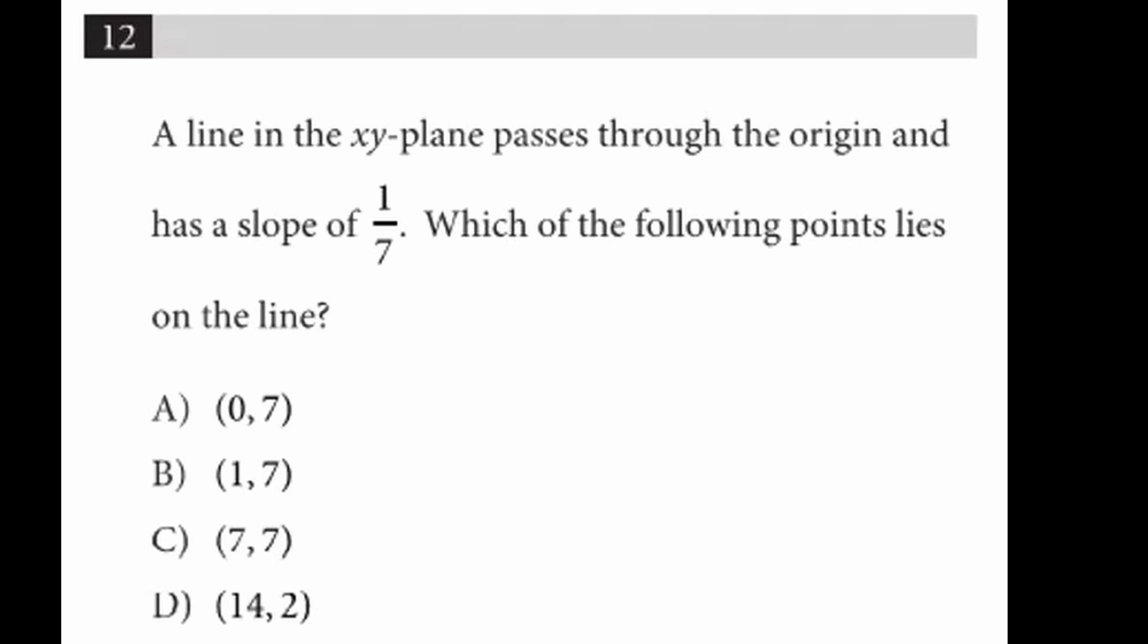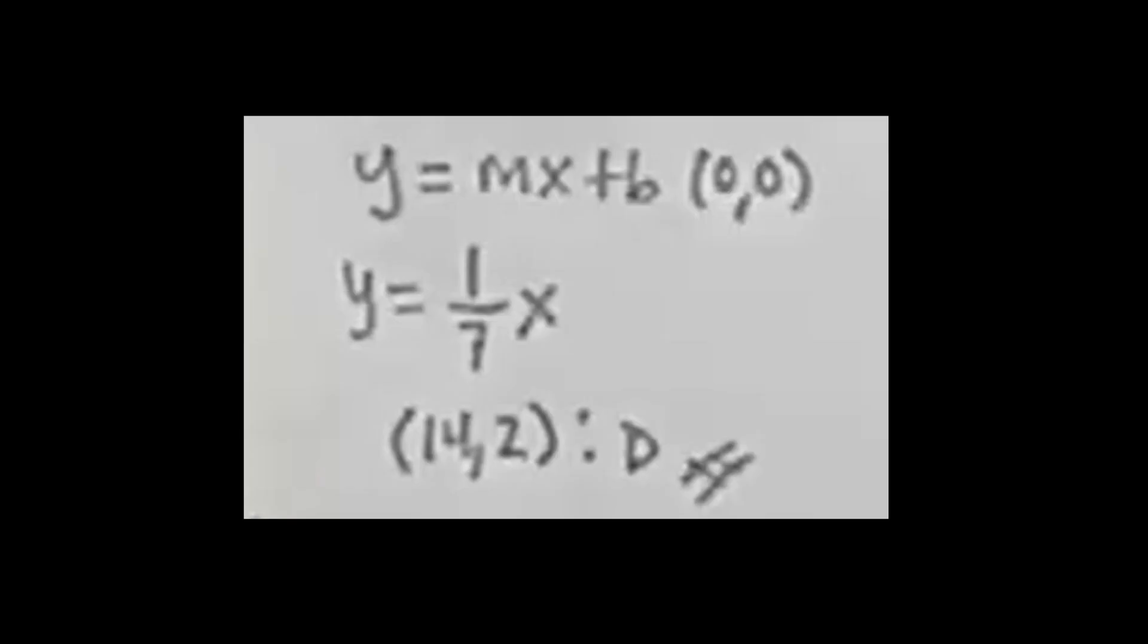We have a line passing through the origin, which is (0,0). We're going to use the equation y equals mx plus b, but since it goes through the origin, the y-intercept b is 0.